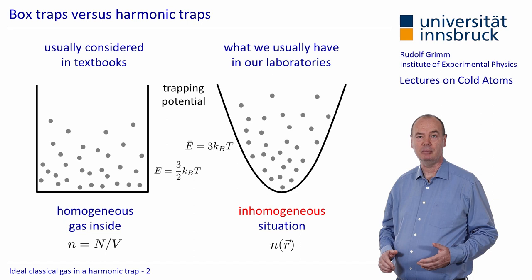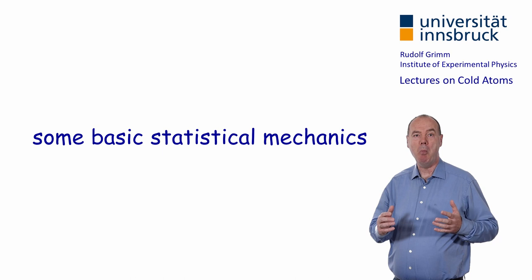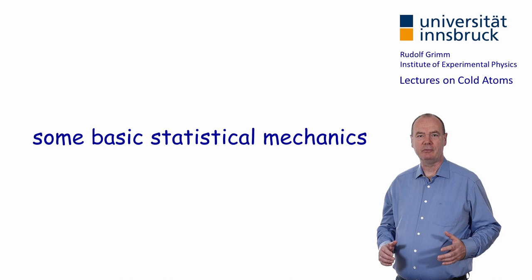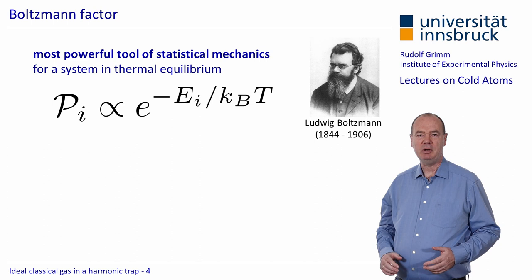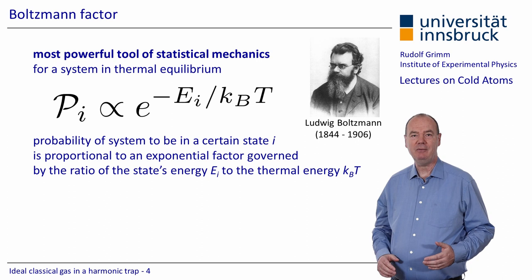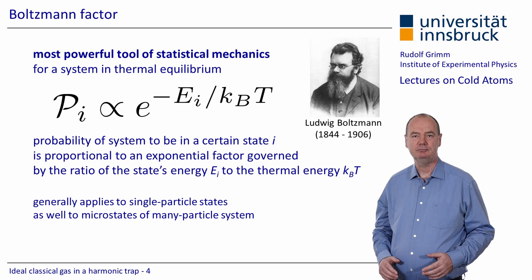Let's consider some basic statistical mechanics. What is the most powerful tool of statistical mechanics? To my opinion, and to the opinion of many textbook authors, it is the Boltzmann factor. For a system in thermal equilibrium, it says that the probability of a system to be in a certain state is proportional to an exponential factor governed by the ratio of the state's energy E to the thermal energy k_B T. This generally applies to single particle states as well as to microstates of a many-particle system.